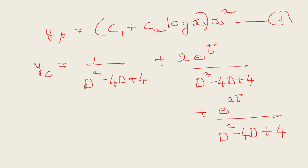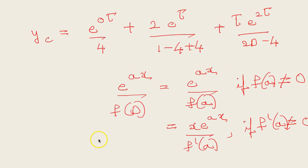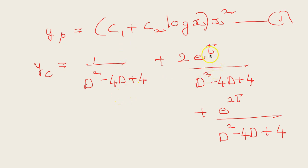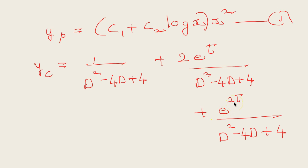The particular integral is: [1/(D²−4D+4)] + [2e^t/(D²−4D+4)] + [e^(2t)/(D²−4D+4)]. For the first term, substituting D = 0 gives 1/4. For the second term, substituting D = 1 gives 2e^t/(1 − 4 + 4) = 2e^t. For the third term, substituting D = 2 gives 4 − 8 + 4 = 0, so we apply the formula: te^(2t)/(2D − 4).